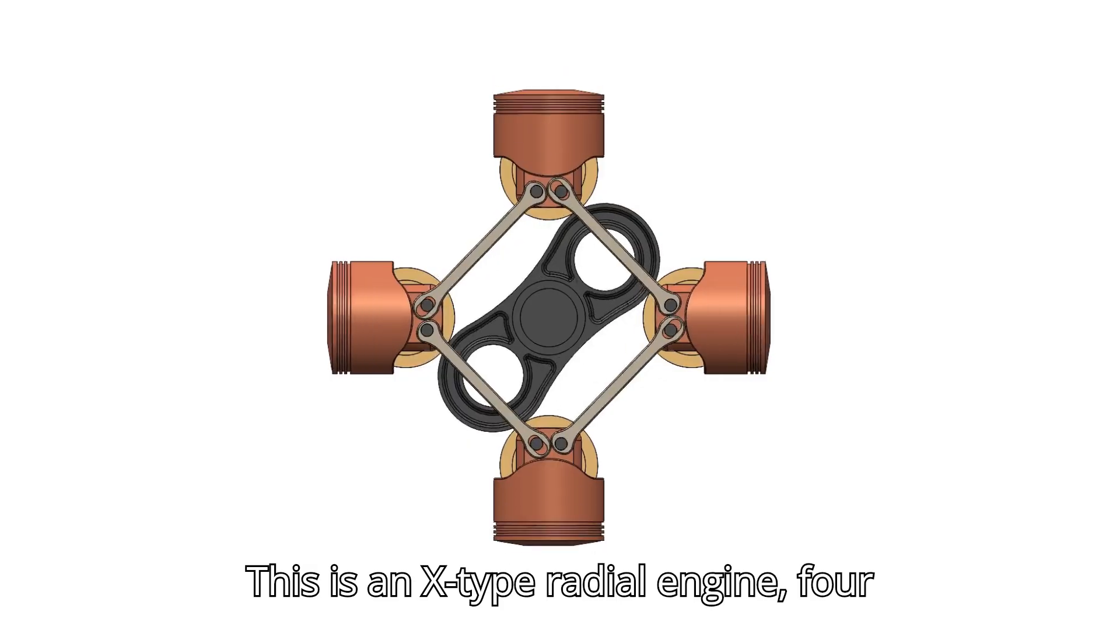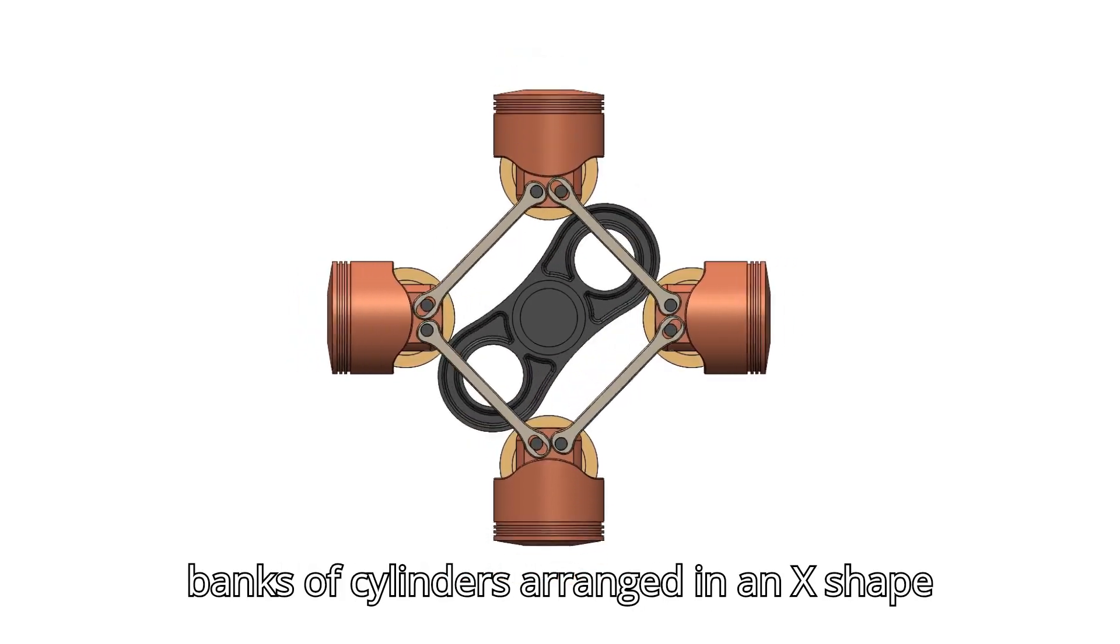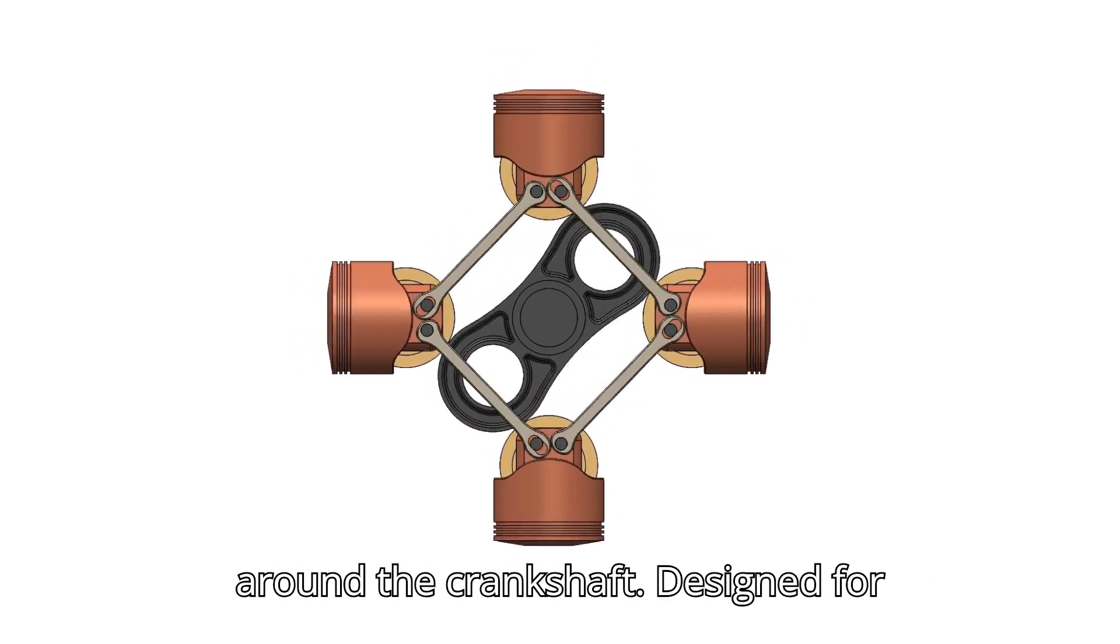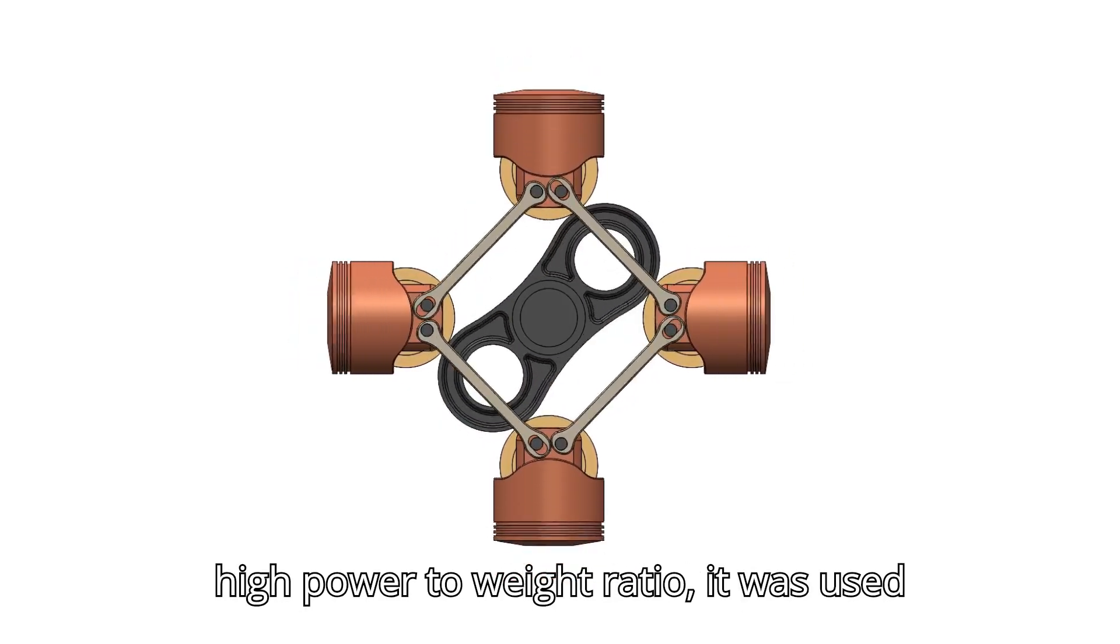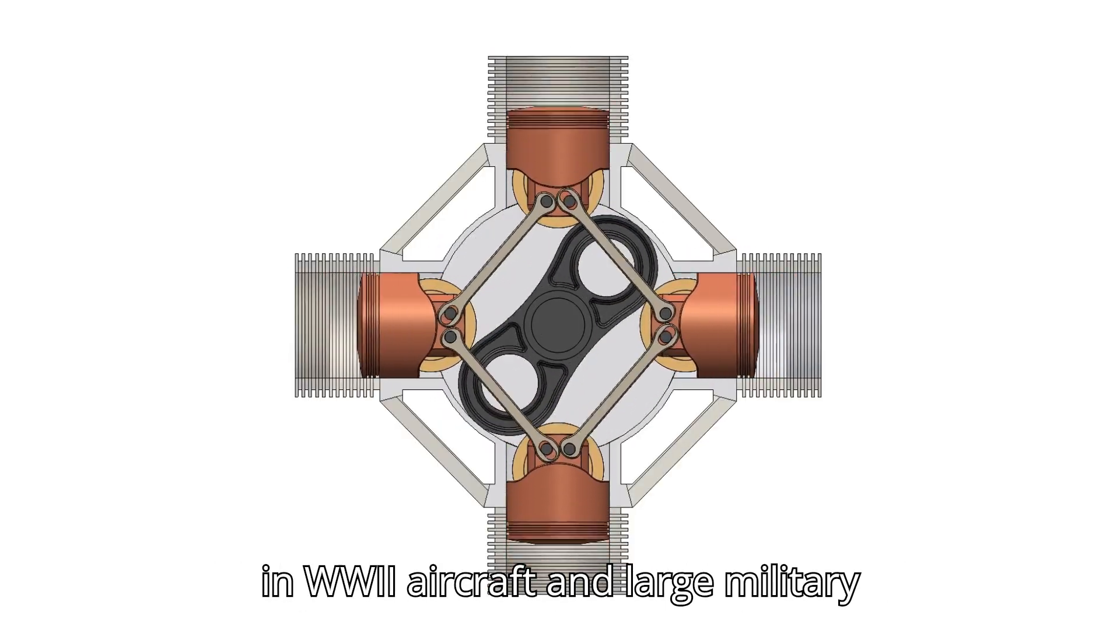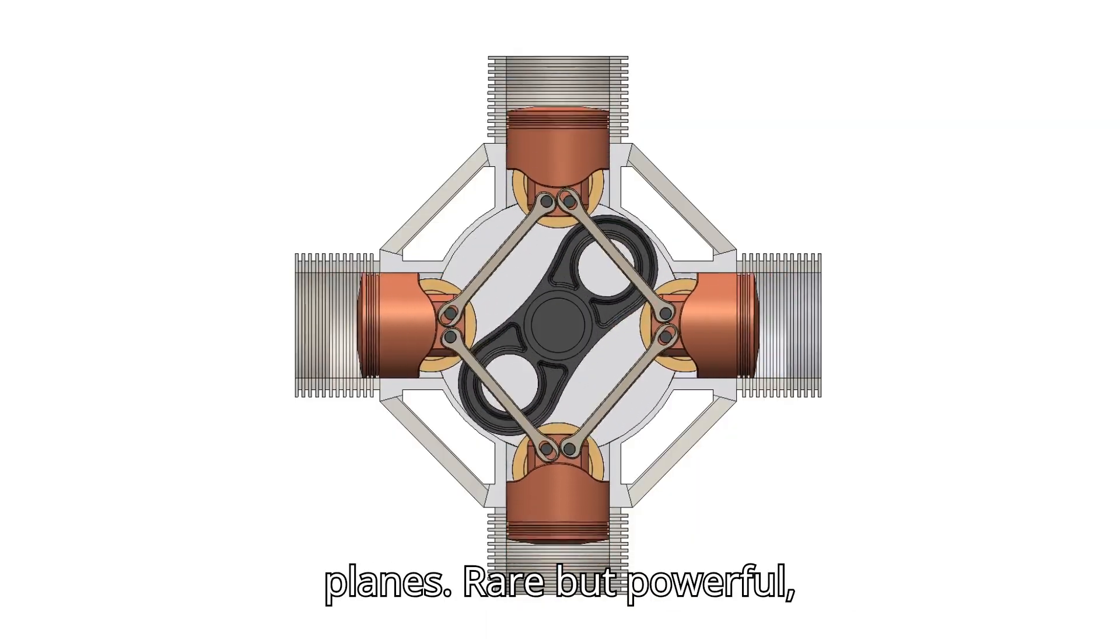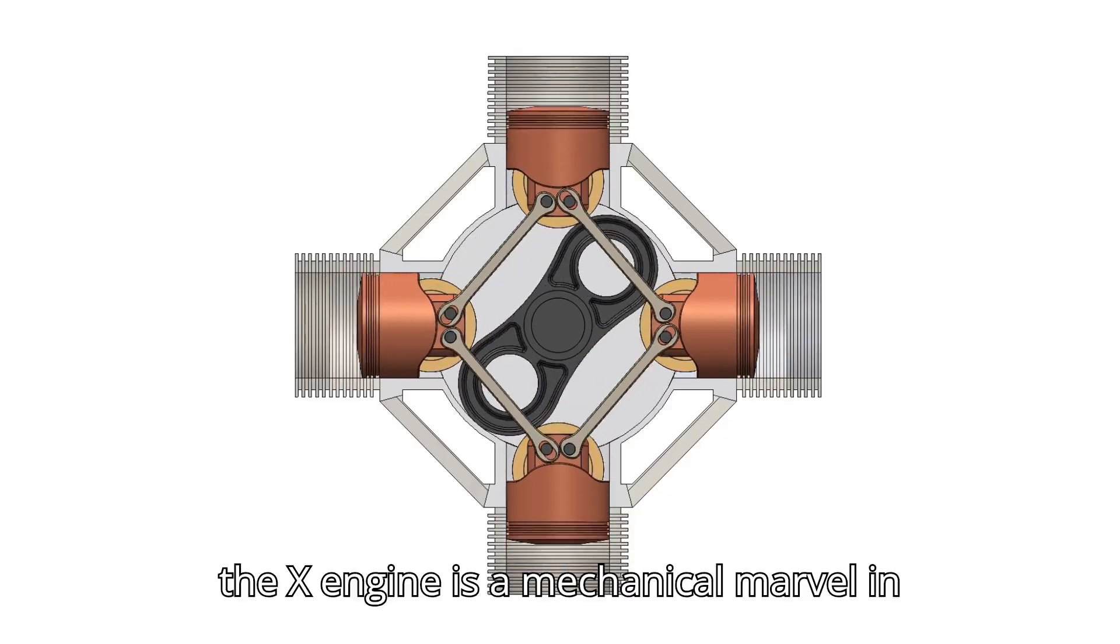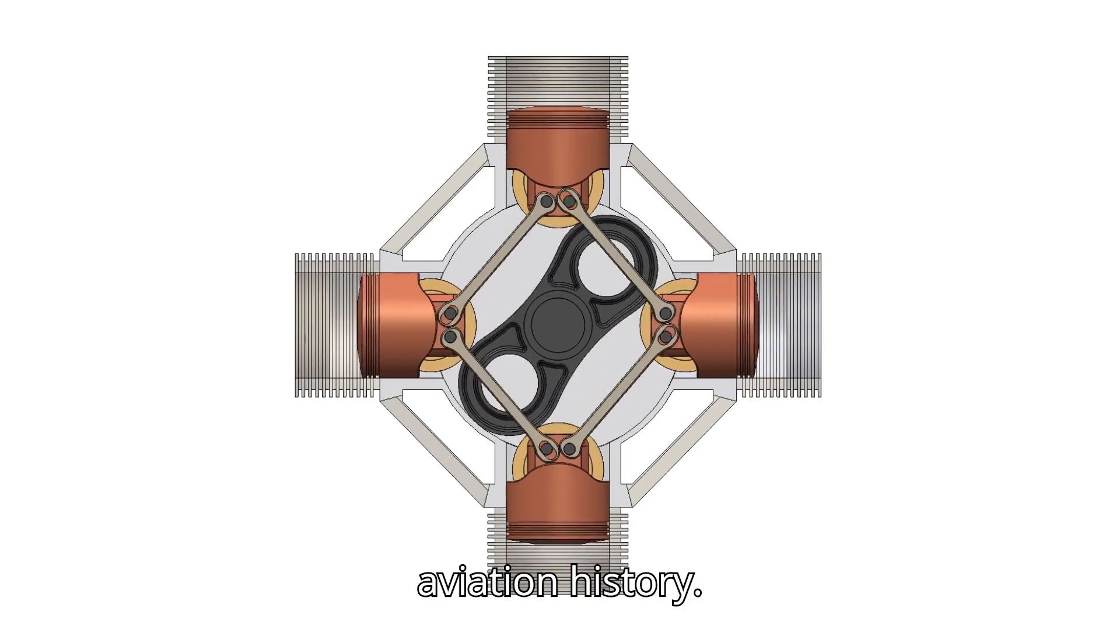This is an X-type radial engine, four banks of cylinders arranged in an X-shape around the crankshaft. Designed for high power-to-weight ratio, it was used in WWII aircraft and large military planes. Rare but powerful, the X-engine is a mechanical marvel in aviation history.